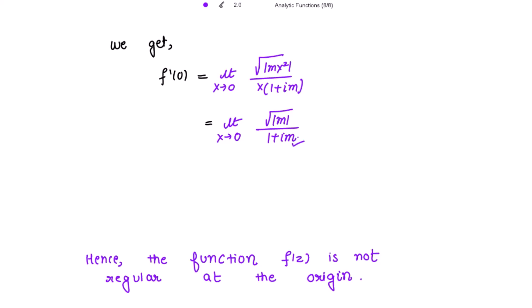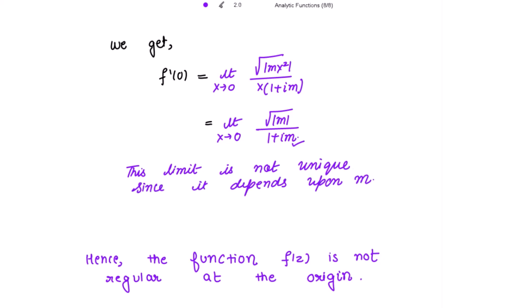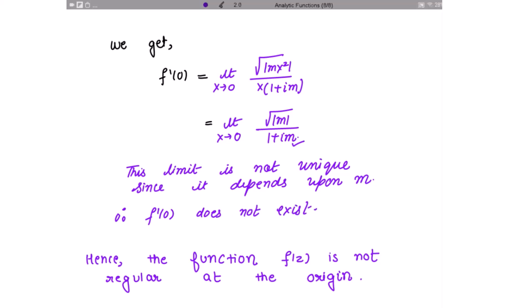Since this limit is not unique — it depends upon the values of m — therefore f'(0) does not exist. Hence, the function f(z) is not regular at the origin.